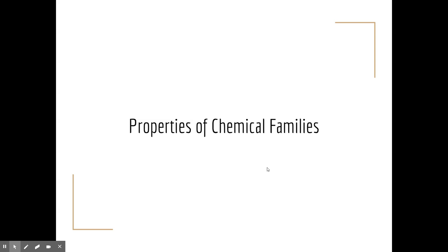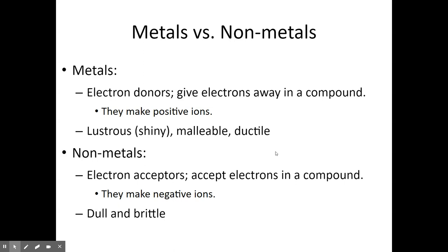Next we'll talk about the properties of the major chemical families — focusing on the named ones. Metals are generally electron donors: they like to give away electrons when forming compounds, which means they make positive ions or cations. They have characteristic metallic properties — they're lustrous (shiny), malleable, and ductile, and are generally good conductors of heat and electricity.